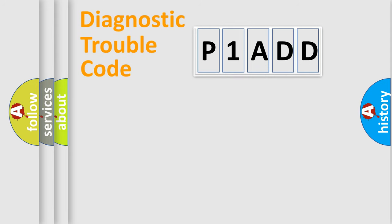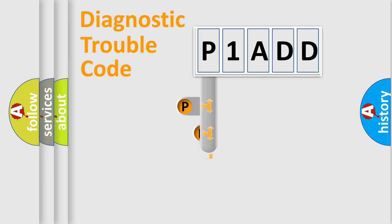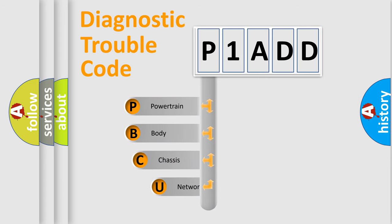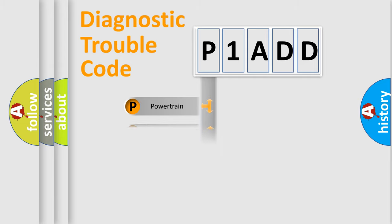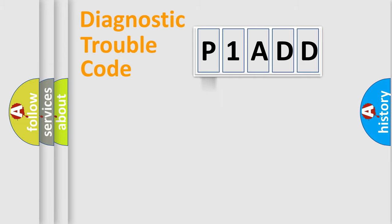Let's do this. First, let's look at the history of diagnostic fault code composition according to the OBD2 protocol, which is unified for all automakers since 2000. We divide the electric system of the automobile into four basic units: Powertrain, Body, Chassis, and Network. This distribution is defined in the first character of the code.